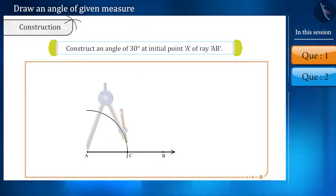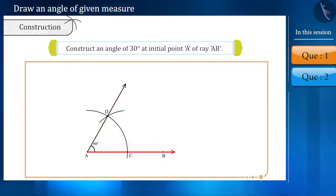Now, without changing the measurement, we will draw one more arc from point C which will intersect the first arc at point D. Now, on angle A, by constructing angle bisector, we can form an angle of 30 degrees on ray AB.